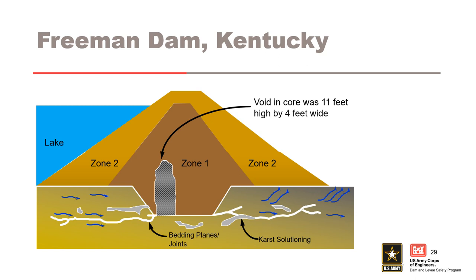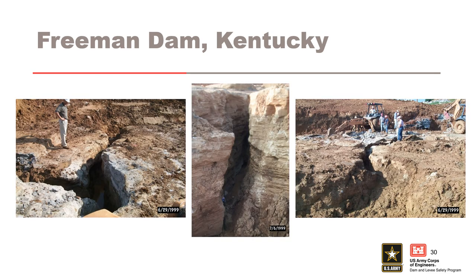Following an extensive investigation of the seepage issues, a chemical grouting program was initiated in the spring of 1998. During the grouting program, a void was encountered within the cutoff trench that extended 11 feet up into the core from the top of the rock. The volume of the void was approximately 135 cubic feet. The dam was breached and the foundation was exposed, revealing solution features present beneath the dam. Infilled soil in the solution feature had eroded over time, providing an open conduit for seepage to carry off the core material. No dam or foundation soils were ever observed on the surface or downstream of the dam. Foundation conditions revealed in excavations led to a decision to completely remove and rebuild the dam with proper cutoffs, rock treatment, and filters.